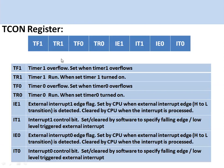The timer control register TCON: TF1 is the timer 1 overflow flag — it is set whenever timer 1 overflows. TR1 is the timer 1 run control bit — when set, timer 1 starts. TF0 and TR0 correspond to timer 0. IE1 and IE0 correspond to the external interrupts of the microcontroller — INT0 and INT1 — and these bits are used for controlling those interrupts.